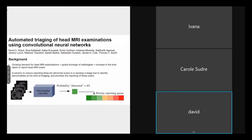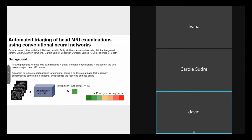A promising solution to reduce reporting times for abnormal scans is to develop an AI-assisted triage tool to identify abnormalities at the time of imaging and prioritize reporting of these scans. A bottleneck to model development is the difficulty of obtaining sufficiently large, clinically representative labeled datasets. Recently, however, it's become possible to automate dataset labeling by deriving accurate labels from radiology text reports using text classification models, assigning these labels to corresponding images at scale. In this way we generated a large labeled dataset of more than 50,000 axial T2-weighted scans from two large UK hospitals.